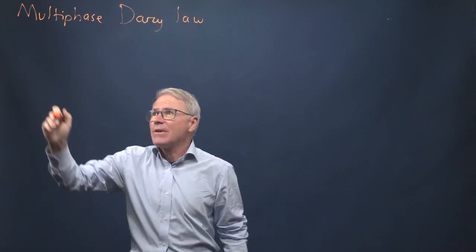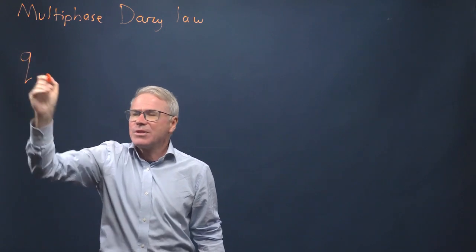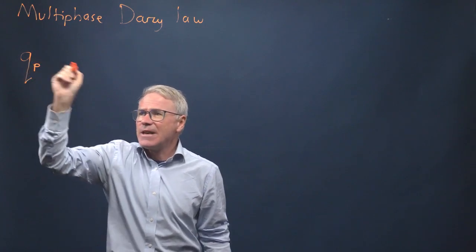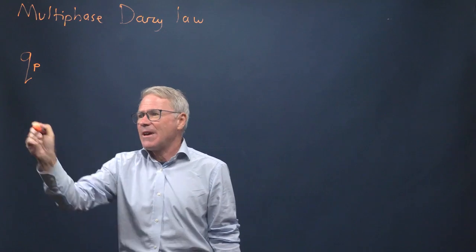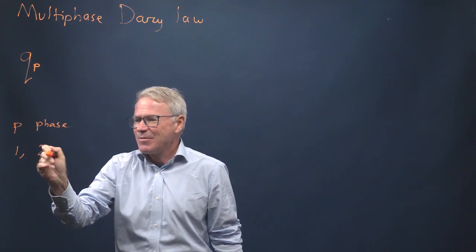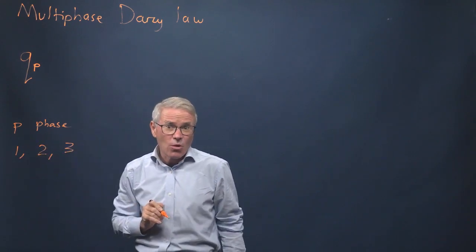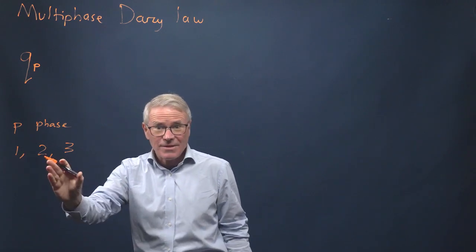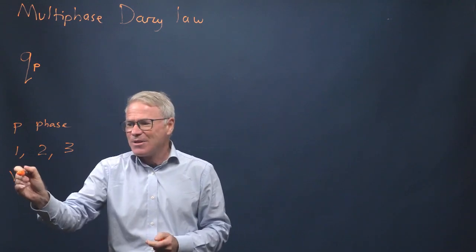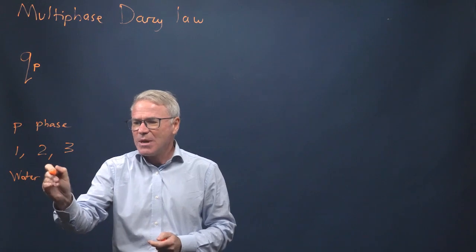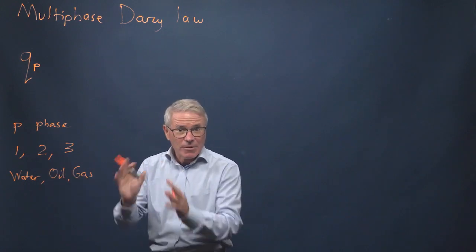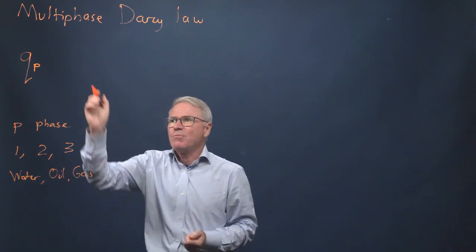Just like Darcy's law for single phase flow, there's going to be a Darcy velocity or flux, but because it's multiphase flow, we need to reference the phase that we're looking at. So P will be the phase. I'm going to have three phases — one, two, three — in order of density. One is the densest phase, then two, then three. By default, one is normally the aqueous or water, two would be oil or gas, and three would be a gaseous phase. That's what we're referring to: the flow of a fluid phase through a porous media.